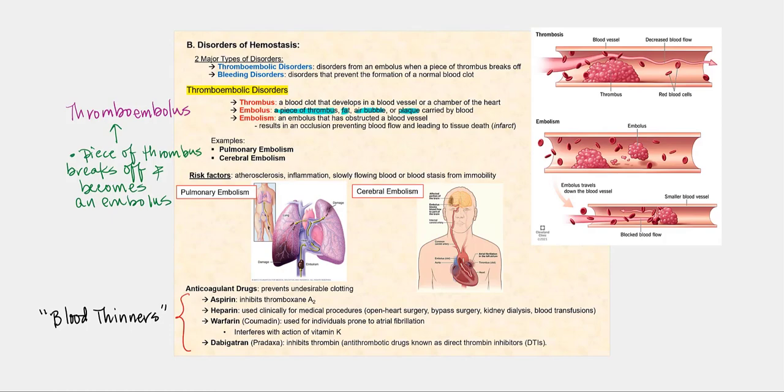So let's talk about a few disorders involving hemostasis. The first one are thromboembolic disorders, disorders from an embolus when a piece of thrombus breaks off, and bleeding disorders where we are unable to form a normal blood clot.